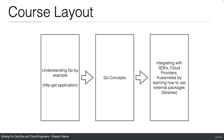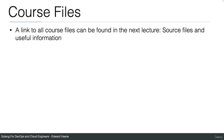This is the course layout. We will start by understanding Go by example — I will show you the HTTP GET application as our first application. Then we will continue with Go concepts, explaining the main concepts using examples. Then we're going to start integrating with SDKs, cloud providers, and Kubernetes by learning how to use external packages. I will write all the Go programs myself in the lectures and demos. A link to all course files can be found in the next lecture — save that content and make sure you know where my GitHub repository is, because that's where all the Go source files are located.